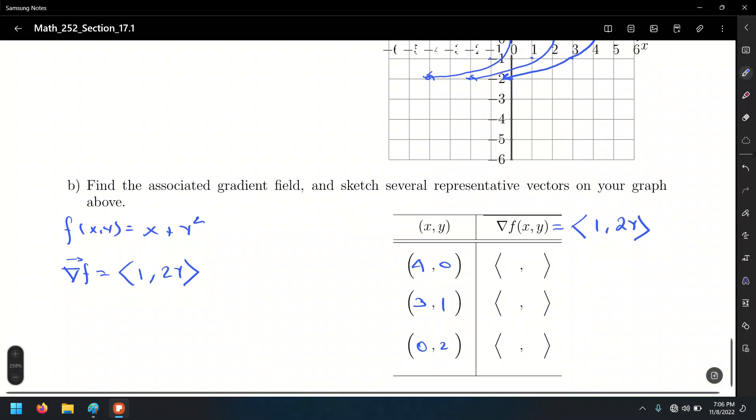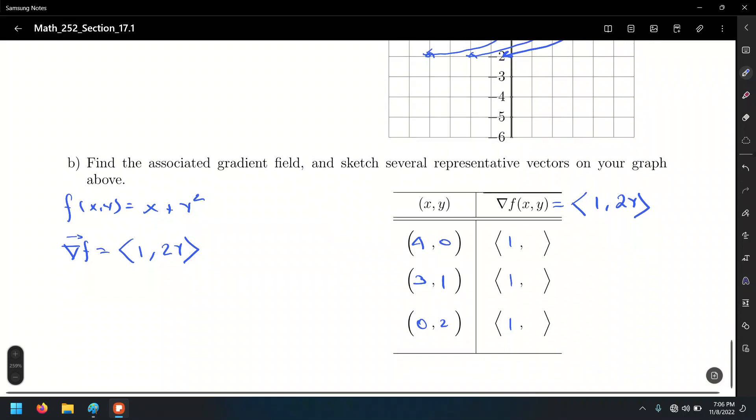All right? So, and again, notice the x component is constant. It doesn't have any variables, so we can just write all ones for the x component of these vectors. However, it is the y component, the one that gets to be multiplied by 2. So 0 times 2, that's 0. 1 times 2 is 2. And 2 times 2 is 4.